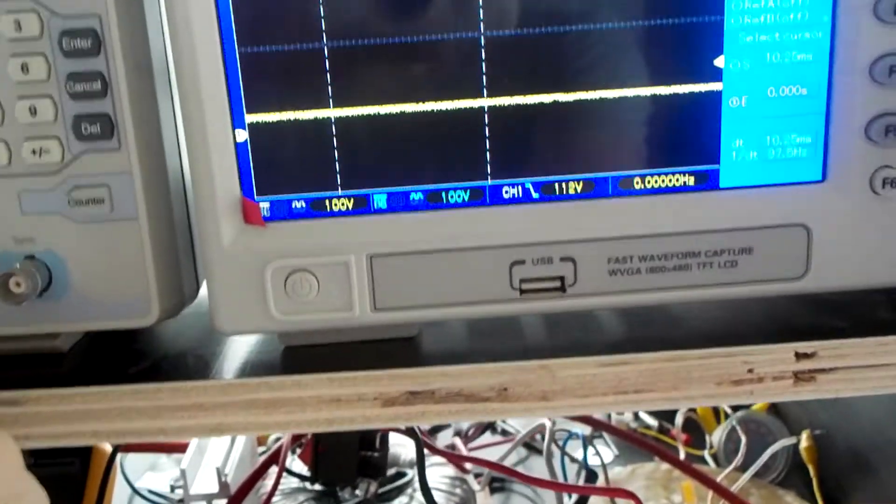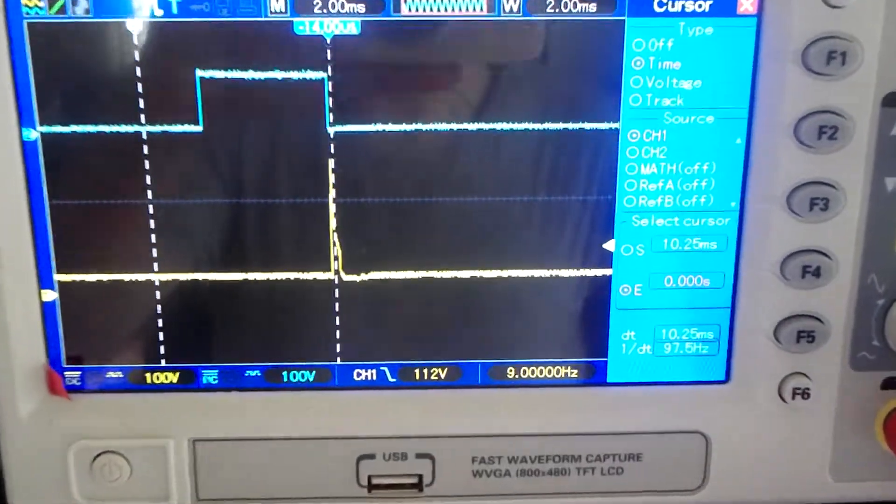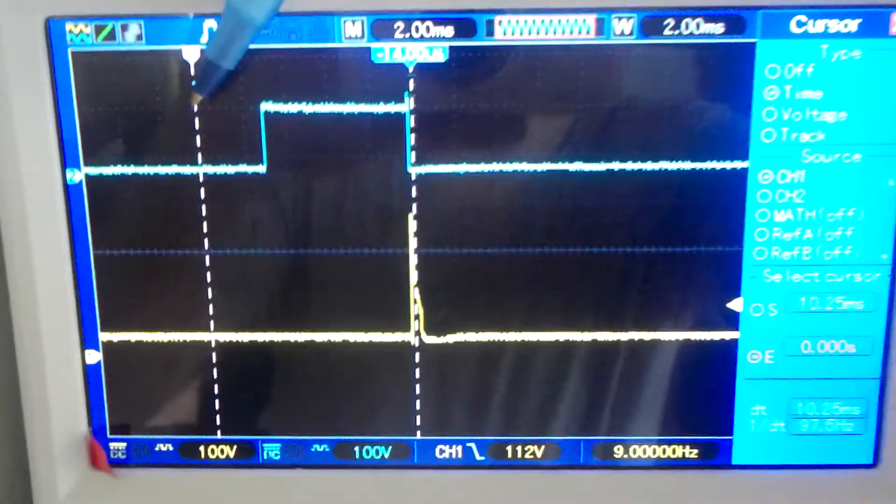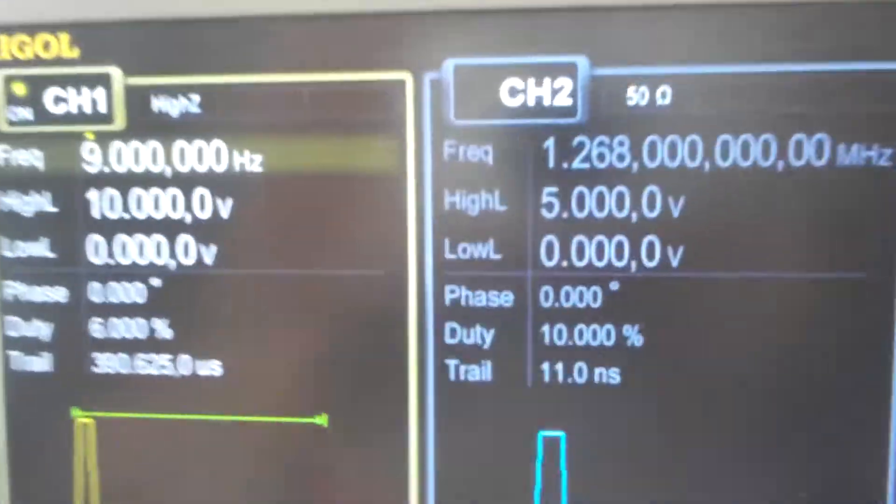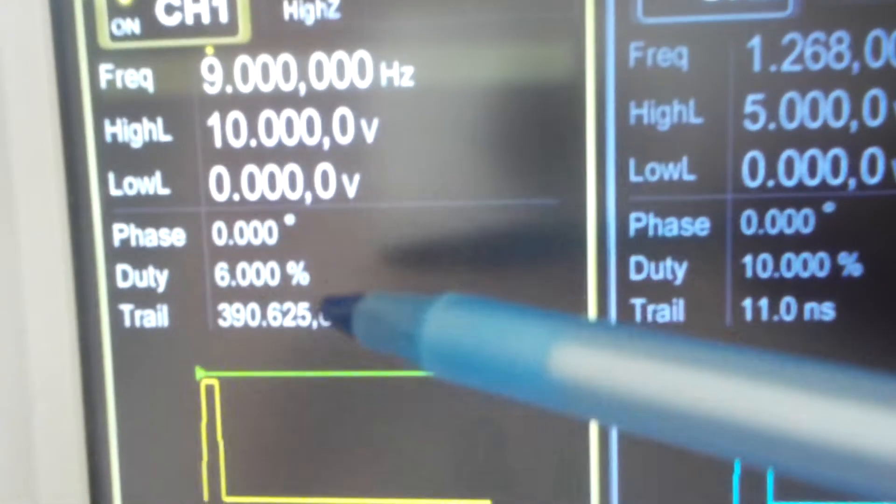So when we now start the circuit then we see that this is our pulse. This is 10 milliseconds. So we are now at 9 Hertz and 6% duty cycle.